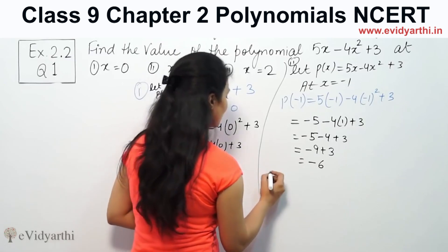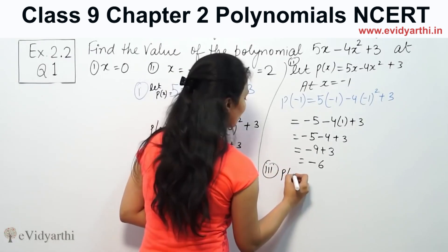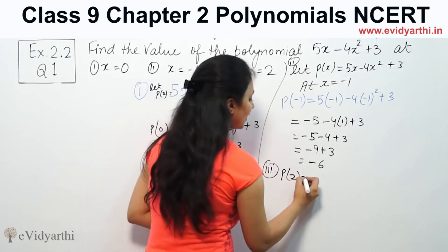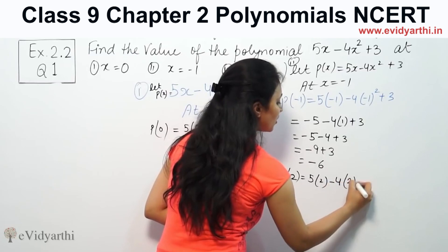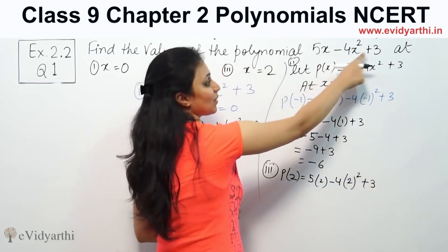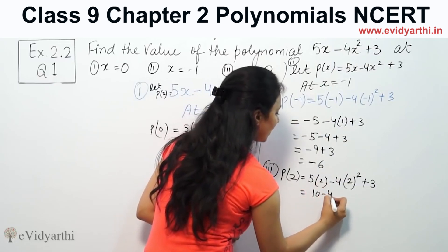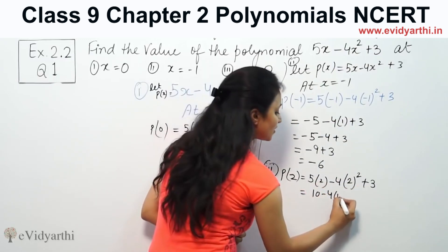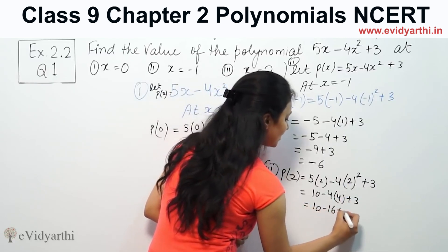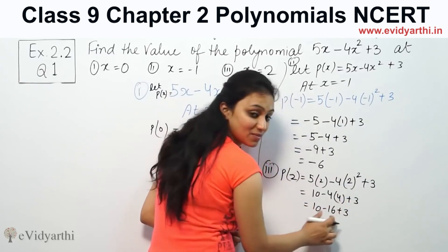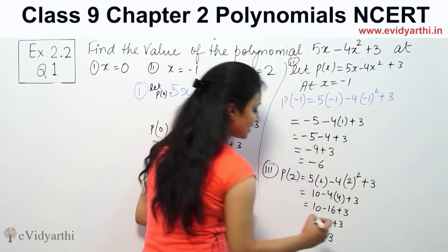Same way, for the third part, p(x) at x equals 2. So substituting x equals 2: 5 times 2 minus 4 times 2 squared plus 3, which gives 10 minus 16 plus 3, equals minus 3.